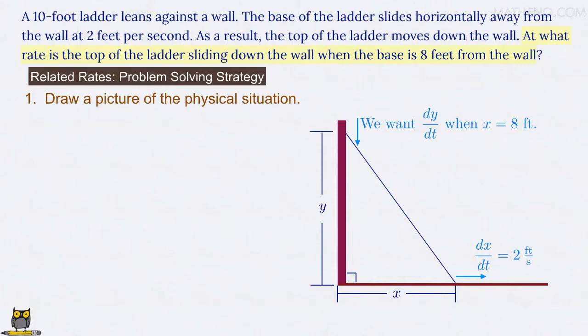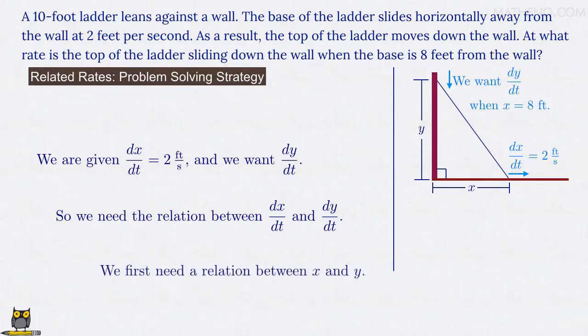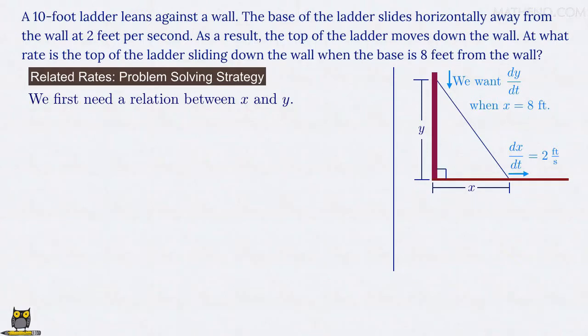So, we're given dx/dt equals 2 feet per second, and we're asked to find the value of dy/dt. We thus need the relation between dx/dt and dy/dt. To find that, we back up a step, and first need to develop a relation between x and y. And that's the second step of our strategy, to write an equation that relates the quantities of interest, in this case between x and y.